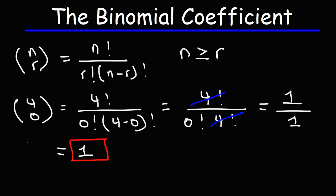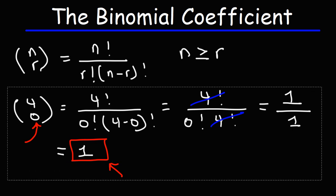So anytime you see a number, if you see a 0 on the bottom, regardless of what this number is, your final answer will be 1. So if it's 5 above 0, 6 above 0, 7 above 0, it's going to simplify to 1.